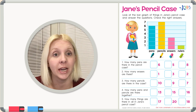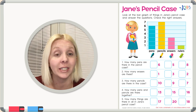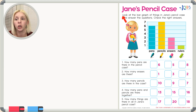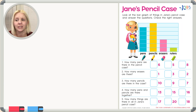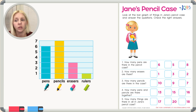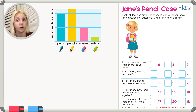Hello, welcome back! Today we're going to look at a worksheet called 'Jane's Pencil Case.' We're going to look at a bar graph of the things in Jane's pencil case. The left side has numbers from one to seven. The bottom has categories: pens, pencils, erasers, and rulers. The bars go up to different numbers, telling us how many of each item is in her case.